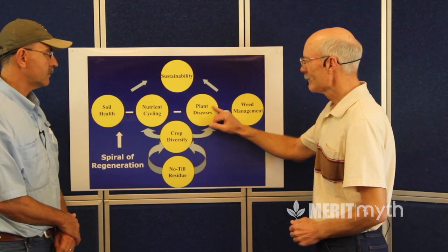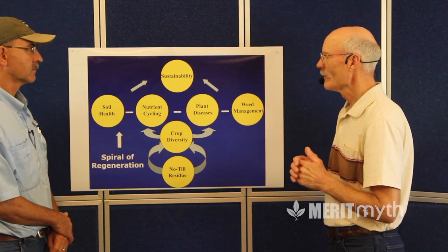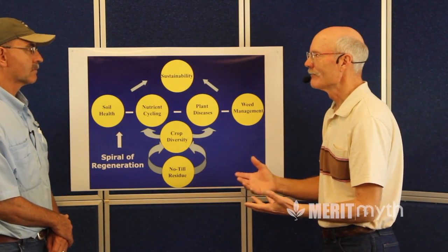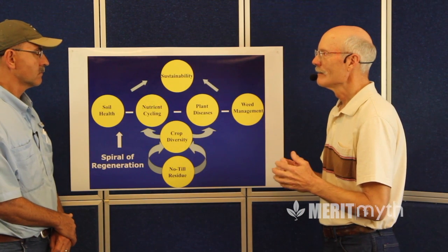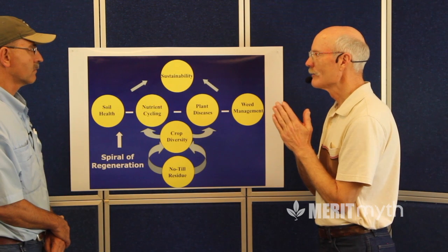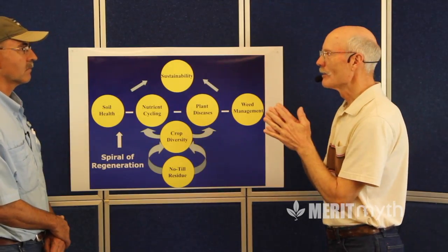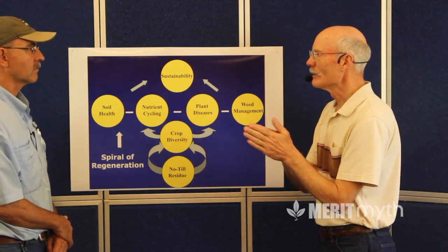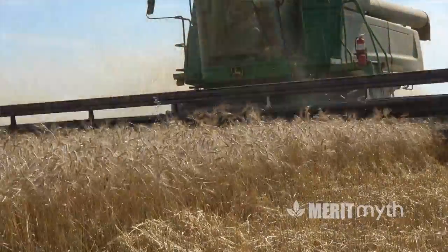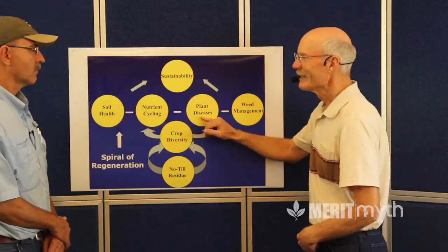Another point is that because we had crop diversity, we were having a better impact on reducing plant diseases. One of the disease problems we have is root diseases, which are very hard to identify and recognize. We've found that the less frequently you grow the crop, the more the yield is. In the Great Plains, winter wheat grown once every four years versus once every two years yields about 15 to 20 percent more, using all the same factors. Therefore, you have less plant diseases.